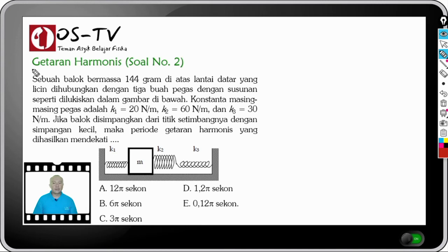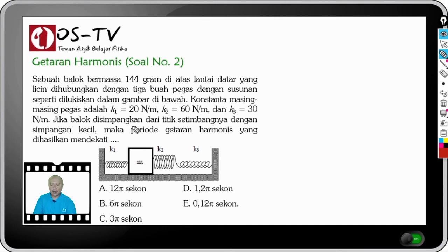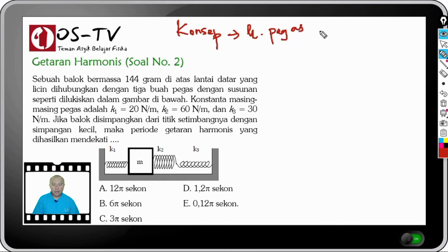Sekarang kita coba selesaikan soal tentang getaran harmonis nomor 2. Disebutkan sebuah balok bermassa 144 gram di atas lantai datar yang licin dihubungkan dengan 3 buah pegas. Konstanta masing-masing pegas adalah K1 = 20 N/m, K2 = 60 N/m, dan K3 = 30 N/m. Jika balok disimpangkan dari titik setimbangnya, maka periode getaran harmonis yang dihasilkan mendekati? Konsep yang diperlukan adalah konstanta pegas dan periode getaran pegas.